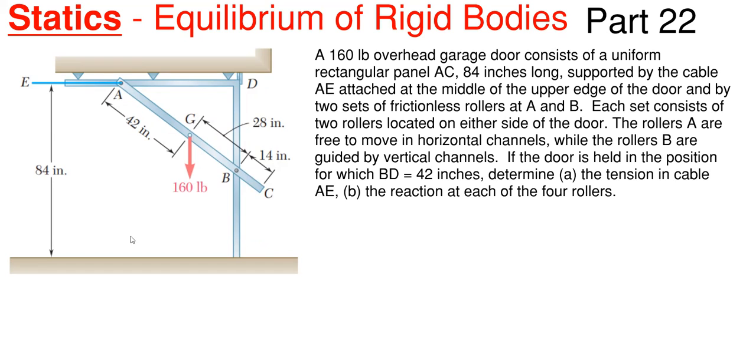So what we have going on is we have this garage door as shown from a side profile here with a very long winded description that states that a 160 pound overhead garage door consists of a uniform rectangular panel AC which is 84 inches long supported by a cable AE attached at the middle upper edge of the door by two sets of frictionless rollers at A and at B.